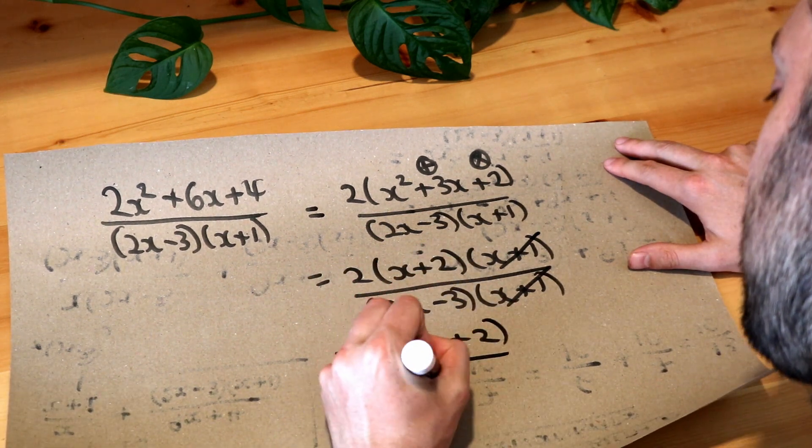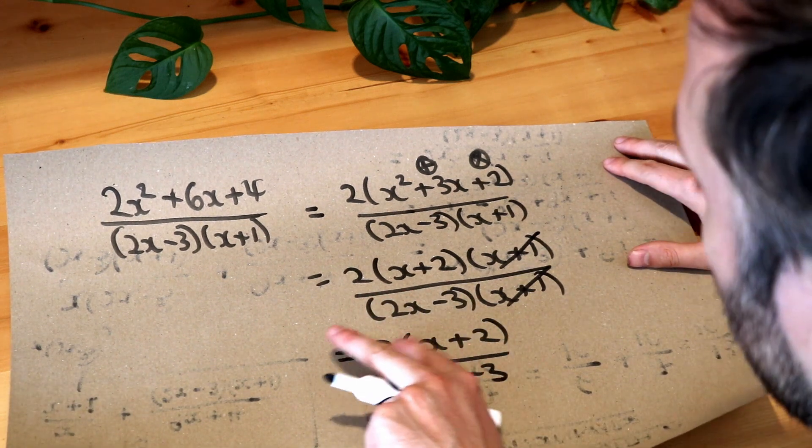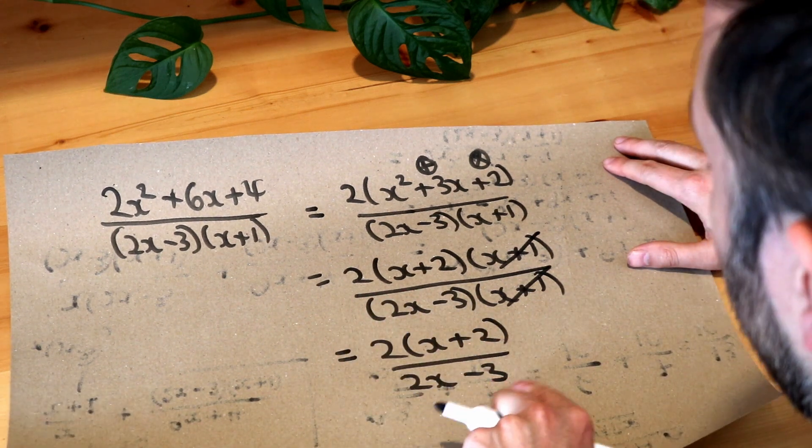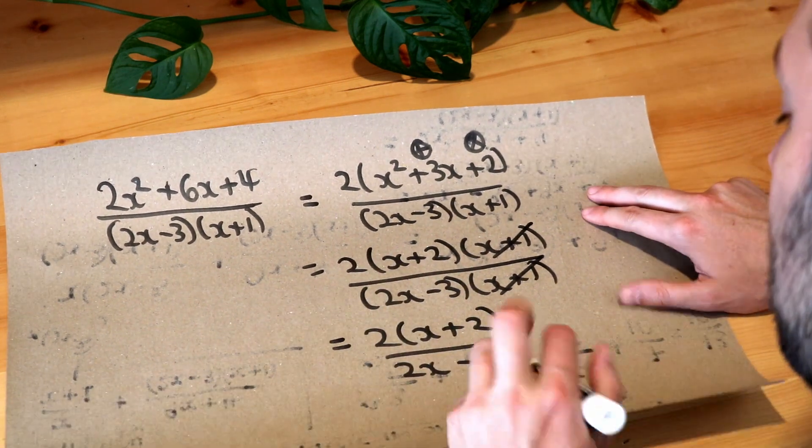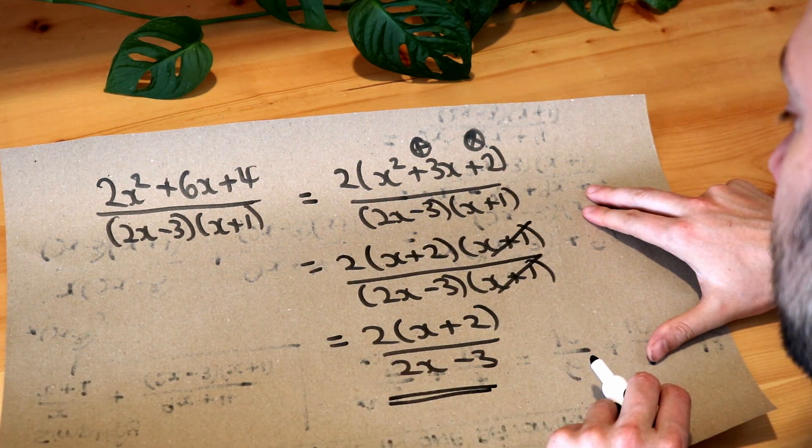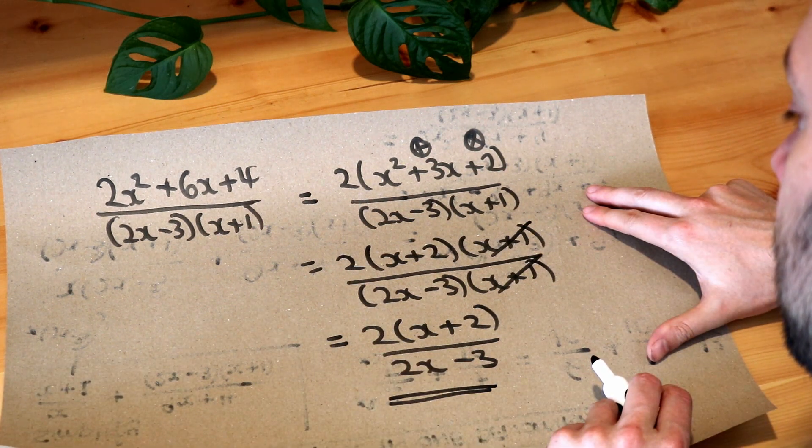You could expand out this numerator to put 2x plus 4 over 2x minus 3 but there's no need to that would just be as simple as 2x plus 4 but that is the final answer that we're left with.